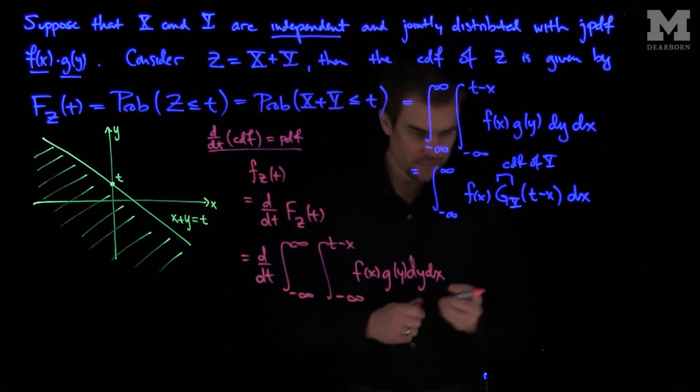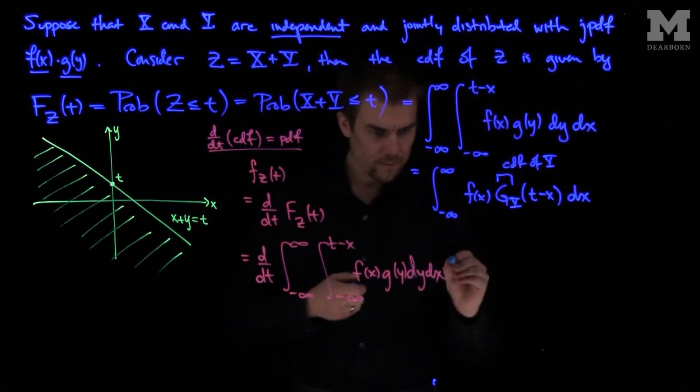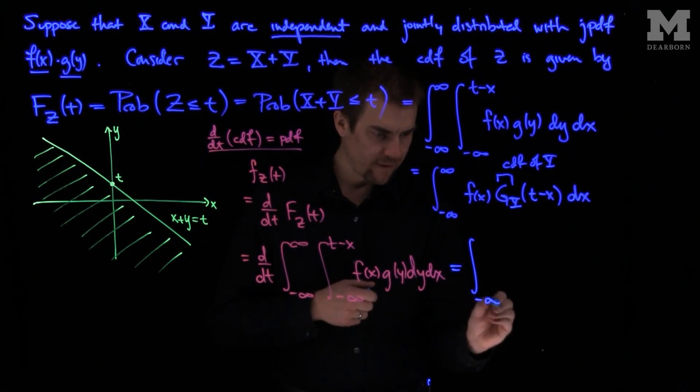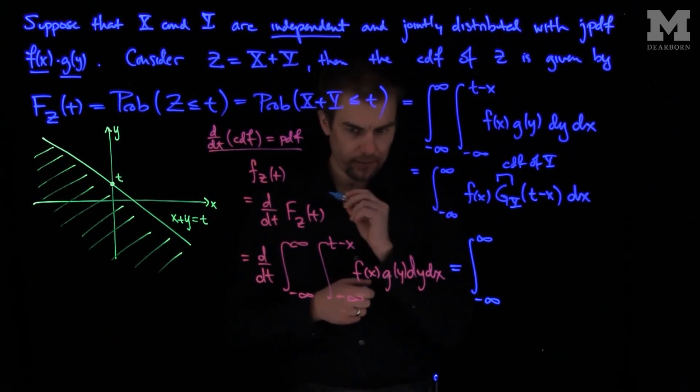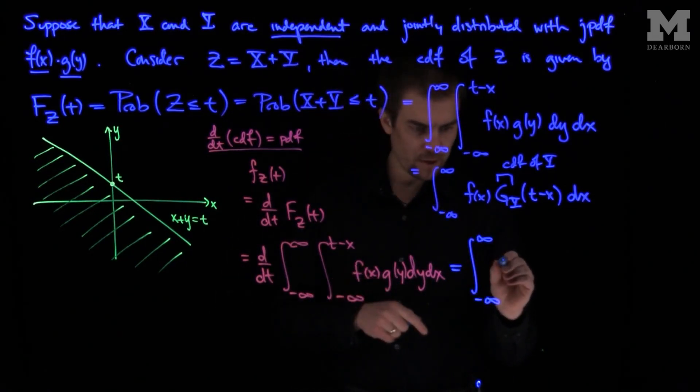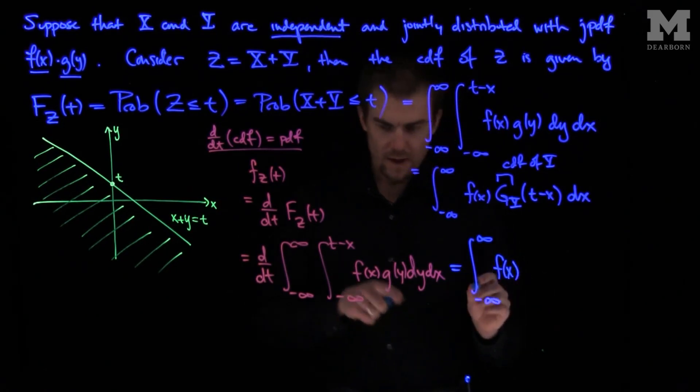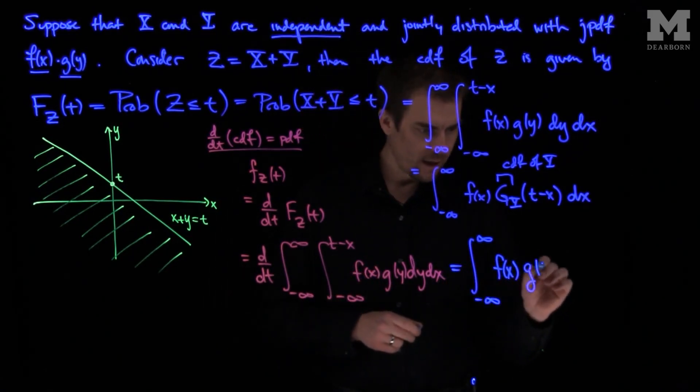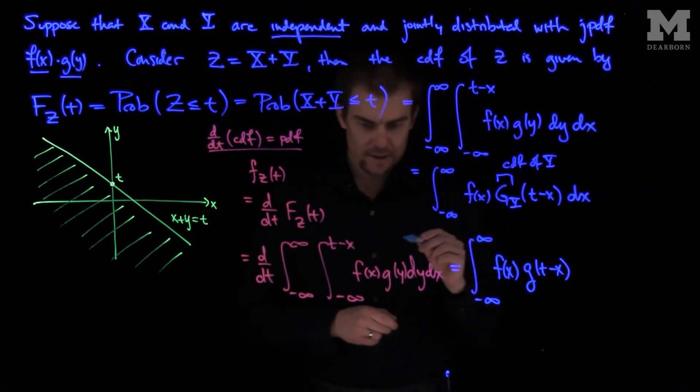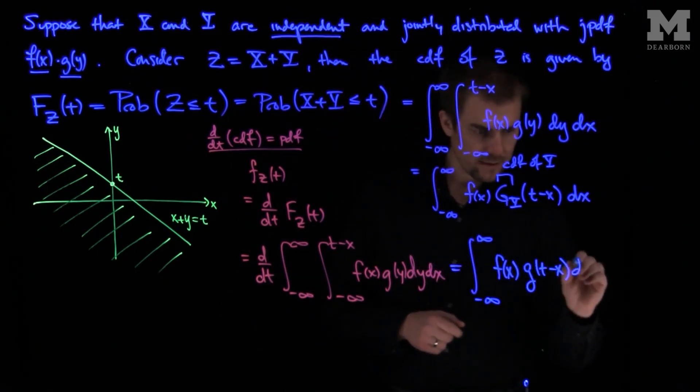And we'll see that this formula will simplify to the integral from negative infinity to infinity, the f of x stays put, I have f of x, and then I'm going to have g of t minus x dx.